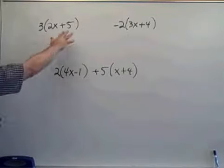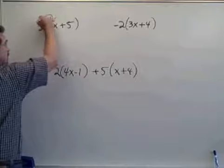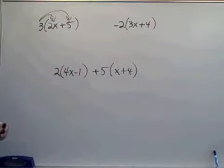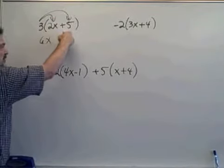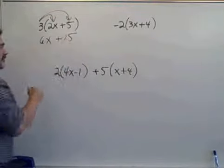So if we're going to remove the parentheses here, we distribute that multiplication of three times both of those terms. Three times 2x gives us 6x. Three times plus 5 gives us plus 15.